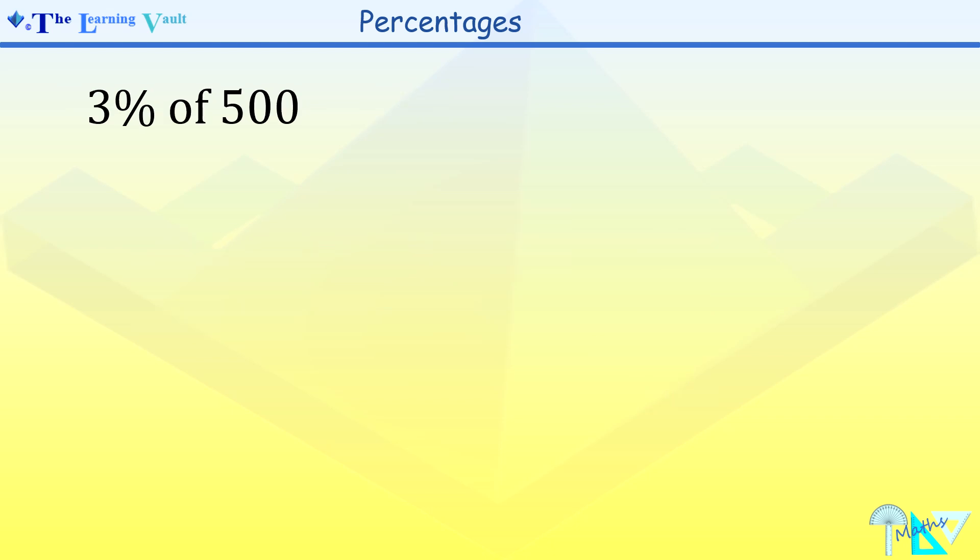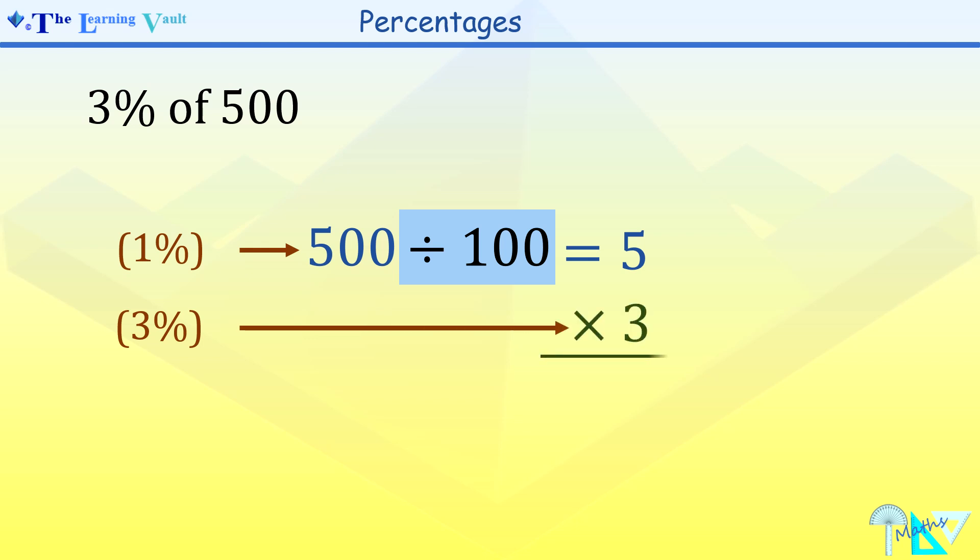Now in finding 3% of 500, first we find 1% of 500, which means we divide by 100. So 500 divided by 100 equals 5. Therefore, to find 3%, we're going to multiply 5 by 3, and that will give us 15. So therefore, 3% of 500 equals 15.